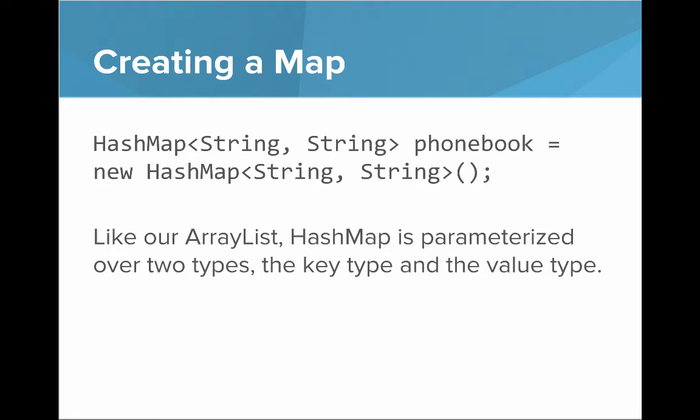So how do we create a map? Well, to create a map, first, a map is templatized over the key type and the value type. So if we want a hash map of strings to strings called phonebook, it's a new hash map of strings to strings. And then don't forget the open close parentheses for the constructor.